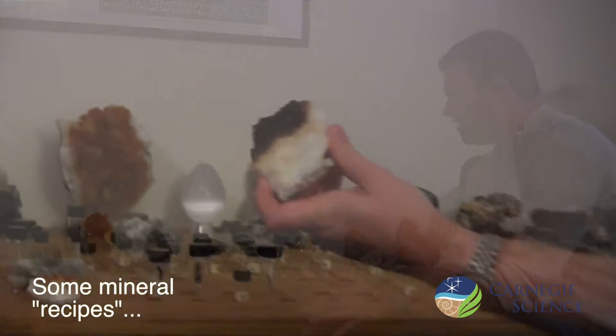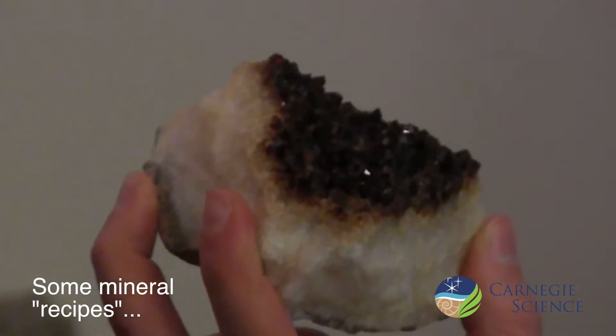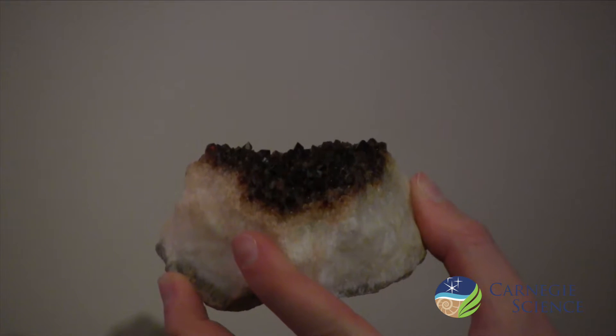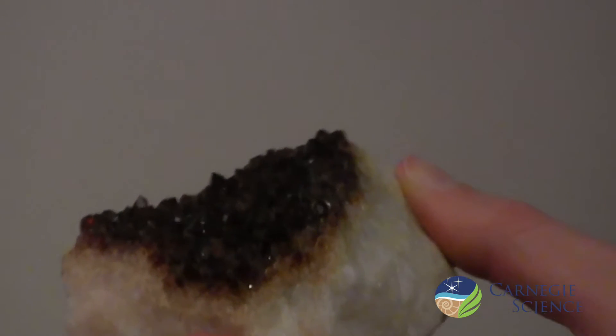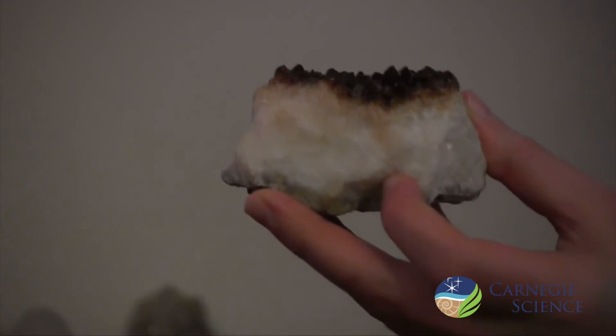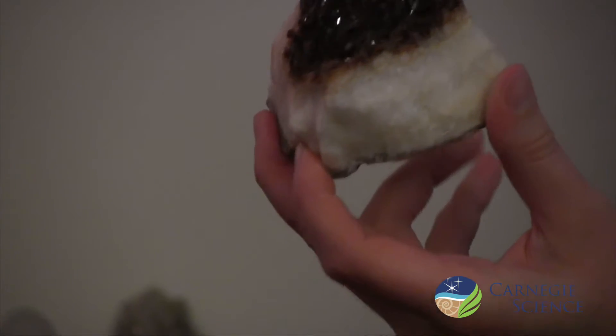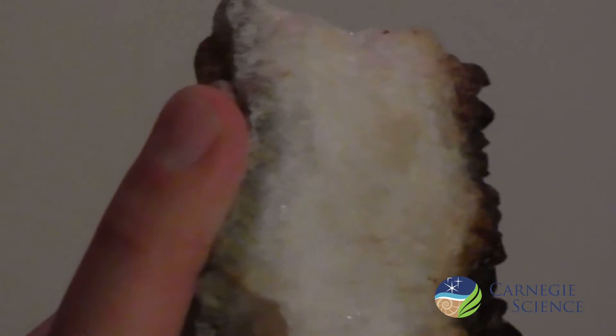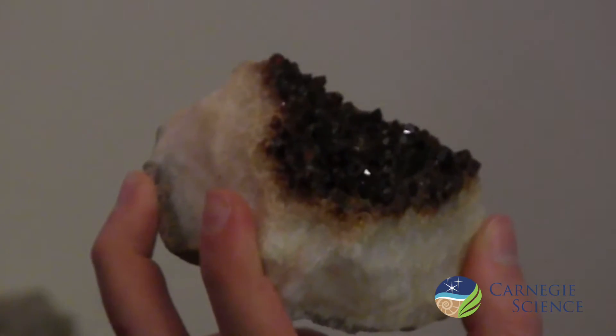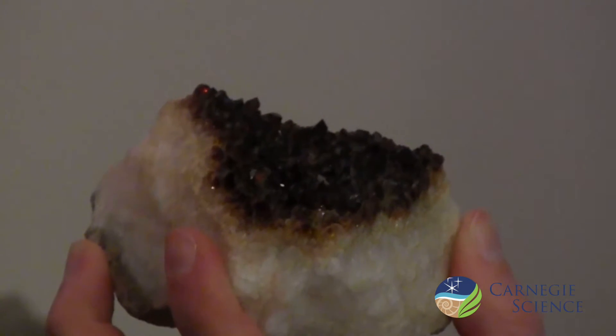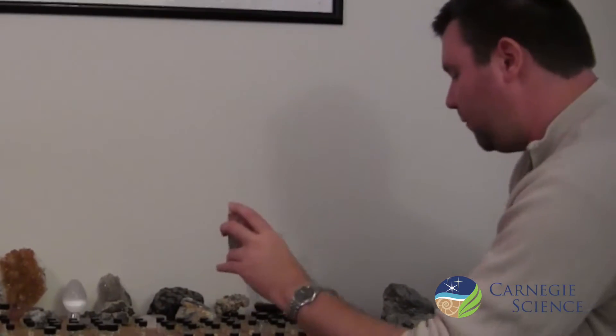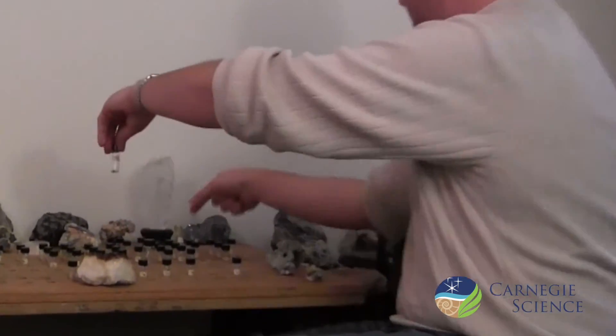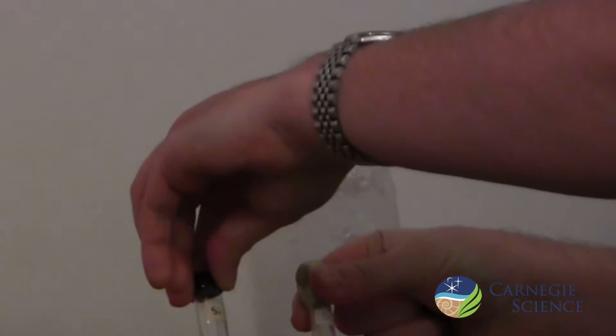This mineral is called quartz. Its mineral species name is quartz, but it's a particular variety of quartz with this darkish orange top called citrine—that's a varietal name. There are a number of different varieties of quartz depending on what the crystals look like and what color they are. This quartz is almost all silicon and oxygen—it's SiO2.